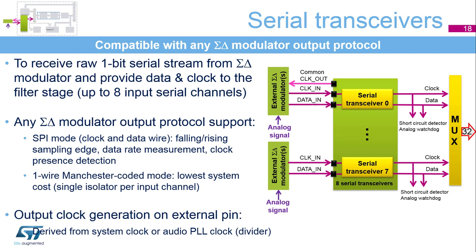Serial transceivers provide the connection to the external Sigma Delta modulators. SPI mode works up to 20 MHz or the DFSDM clock divided by 4, with configurable options including sampling edge selection, data rate measurement, and clock presence monitoring. One-wire Manchester coded mode, where clock is recovered from the data, works up to 10 MHz or DFSDM clock divided by 6. A synchronization detection feature is available in Manchester mode. Manchester mode also offers the lowest system cost in the case of optical isolation of the Sigma Delta modulator, as only a single isolator per input channel is necessary.